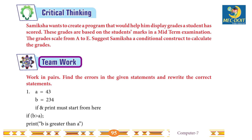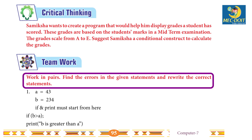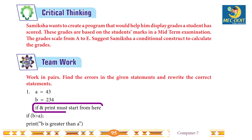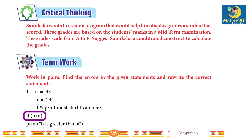Teamwork: work in pairs. Find the error in the given statement and rewrite the correct statement. 1. a = 43; b = 234. The if and print must start from the correct indentation. If b is less than a: print 'b is greater than a'. Ask students to do it by themselves.